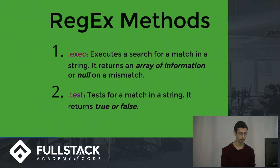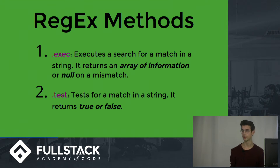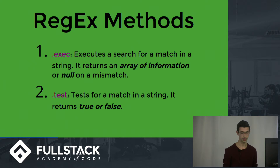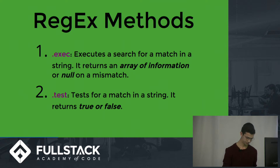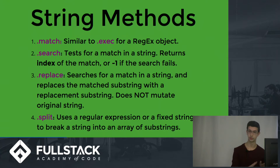Let's look at the methods. The regex methods: there's .exec, which searches for a match in your string and returns an array of information, or null if it doesn't find anything. And there's a .test method, which takes your regex, applies it to the string, and tests if there's a match — returning true or false.